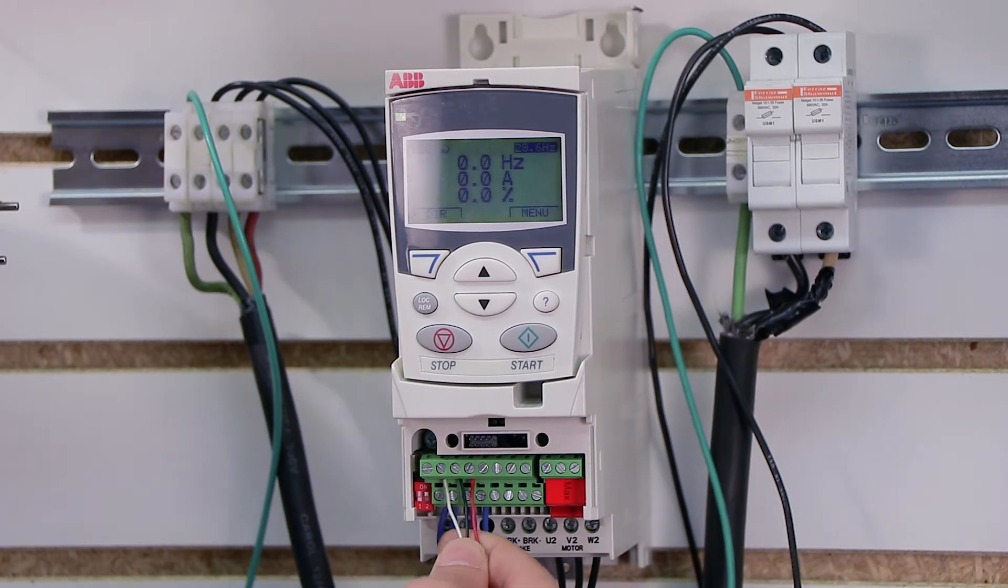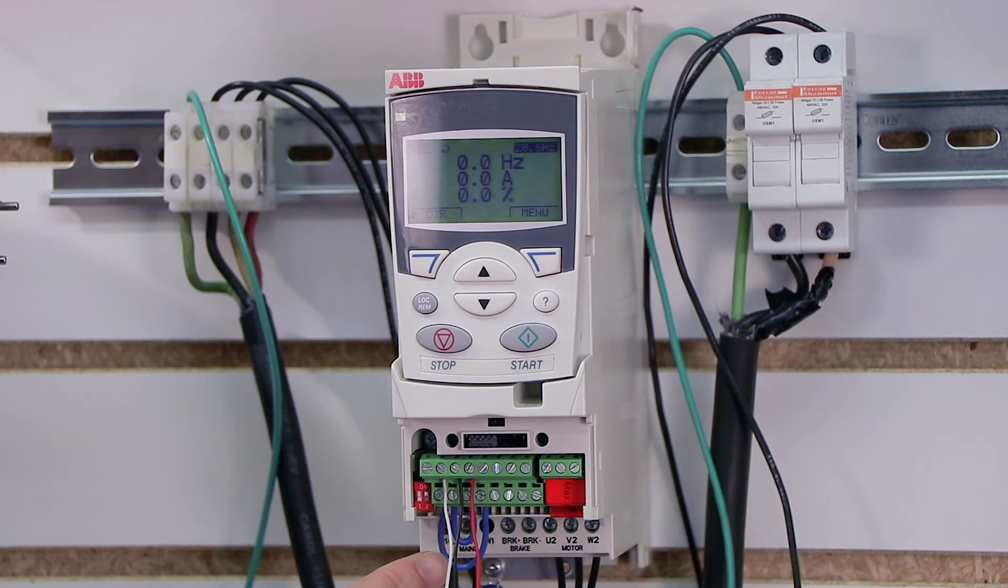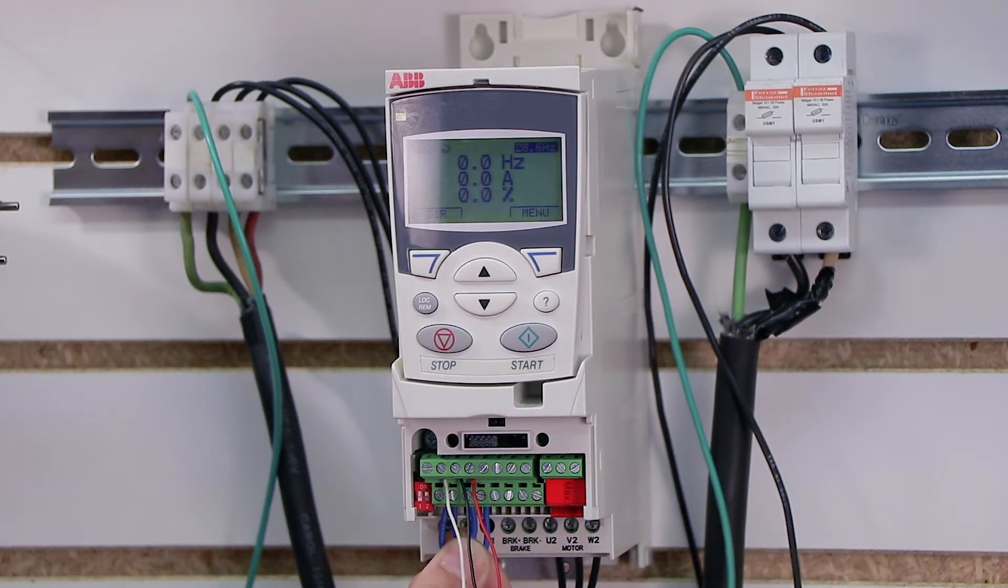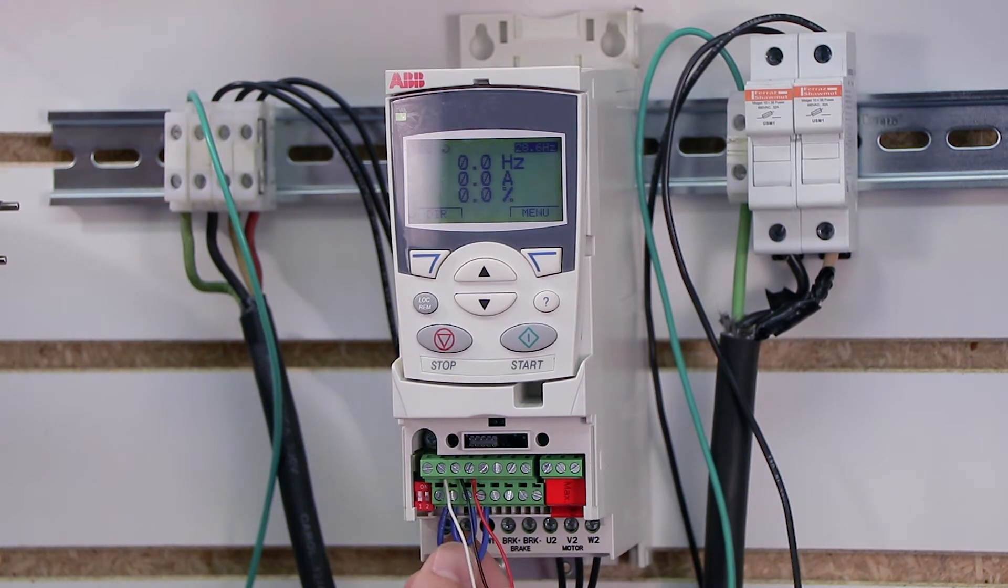But there's one more important thing we need to point out here. Notice down here I have some jumpers set up. This is because when you put the drive in speed pot control, you have to give the drive a start command of some kind. So in order for me to use the speed pot, you're going to see this a little later in the video, we need to have some kind of a start command. Now for the simplicity of this video, I did not wire an external start command or a selector switch - that's going to be in the next video.